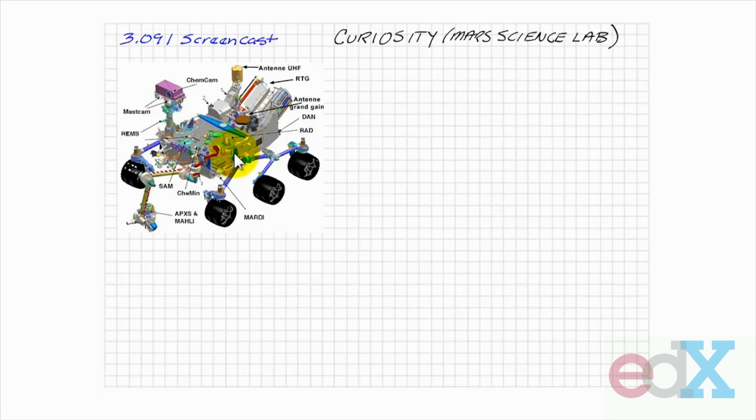Curiosity is a robot now doing measurements on Mars. Its instruments incorporate many of the concepts we deal with in 3091.